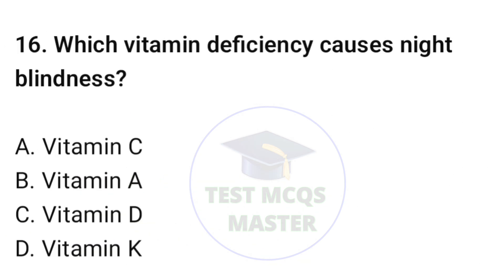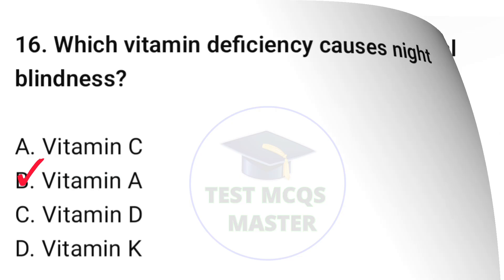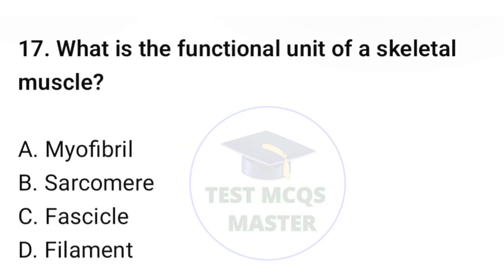Question number sixteen: which vitamin deficiency causes night blindness? The correct option is B, vitamin A. Question number seventeen: what is the functional unit of a skeletal muscle? The correct option is B, sarcomere.